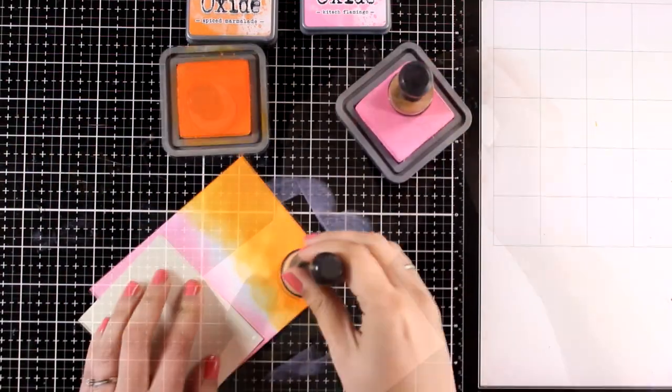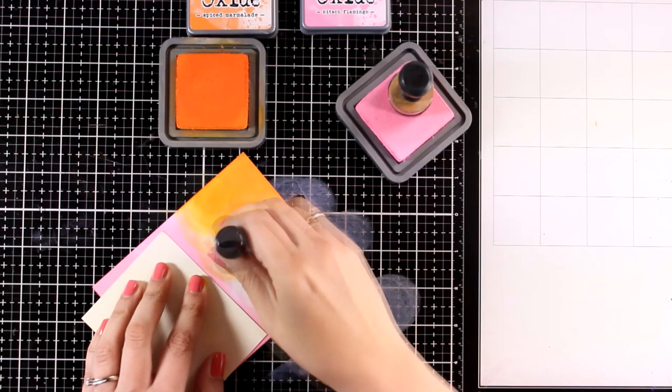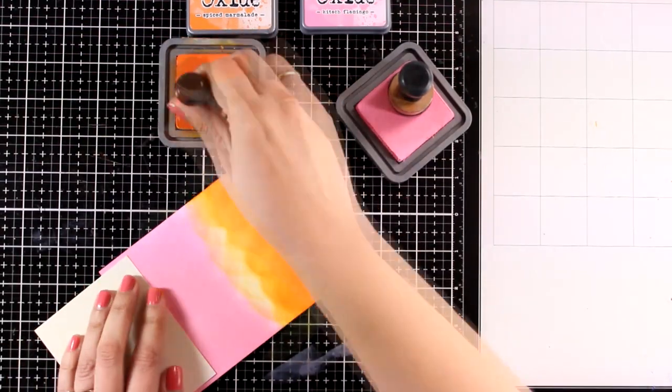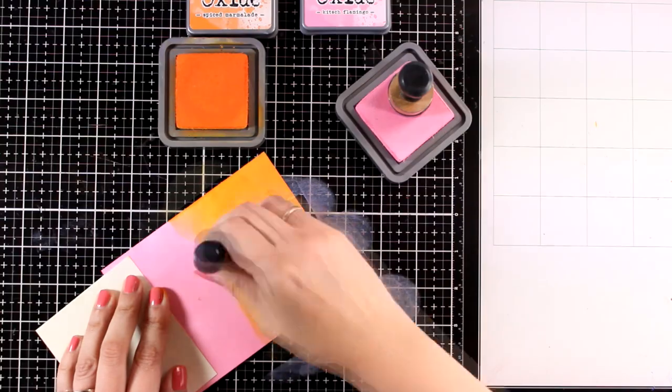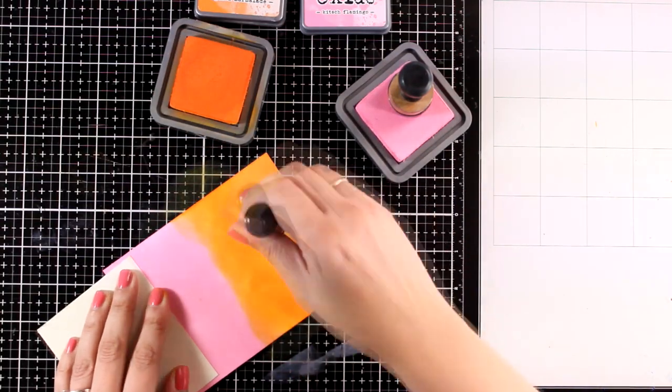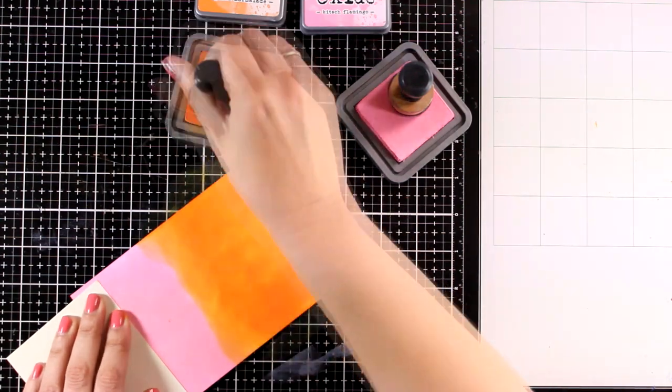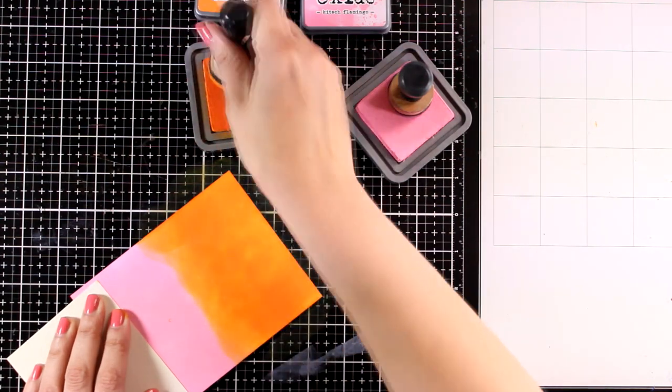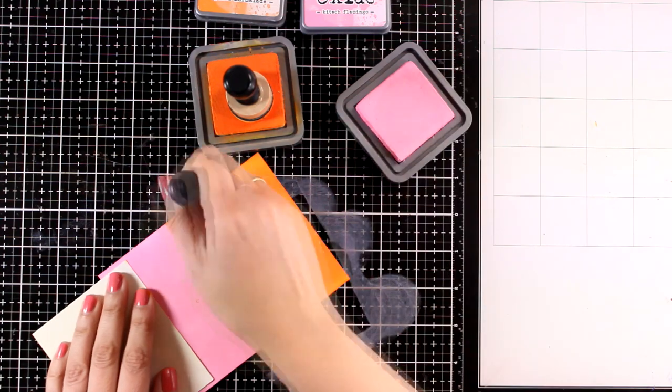I'm starting by combining Kitsch Flamingo with Spiced Marmalade, which is a combination that's absolutely stunning. I inked up both ends of this paper all the way to the middle. I made sure that both ends are nicely saturated with color, which is something very easy to do with the oxides.